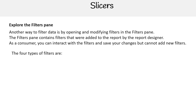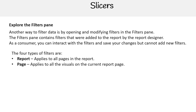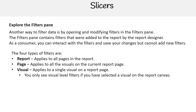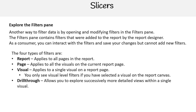There are four types of filters. First, we have Report — this applies to all pages in the report. Then we have Page — this applies to all the visuals on the current report page. Next, we have Visual — this applies to a single visual on a report page, and you only see visual level filters if you have selected a visual on the report canvas. The last type of filter is Drill Through, which allows you to explore successively more detailed views within a single visual.